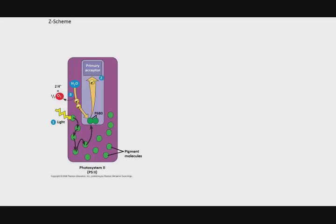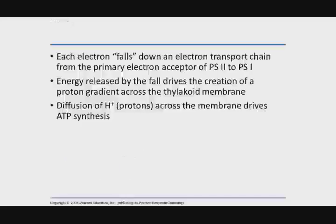As P680 becomes oxidized, it actually rips electrons away from water, which water is abundant in the cell. It's the media in which all this stuff is floating. And it produces protons and O2. So that's where we're producing our first byproduct of oxygen. And that's how P680 is reset, ready to get hit with another photon of light to be oxidized again.